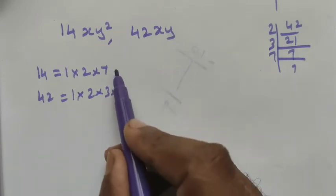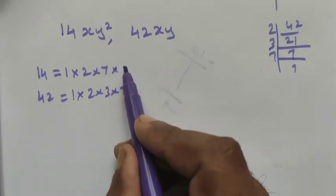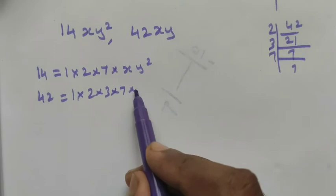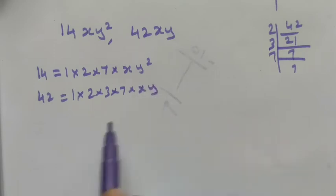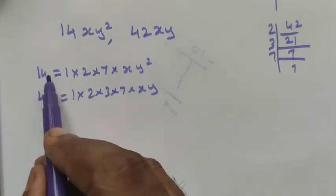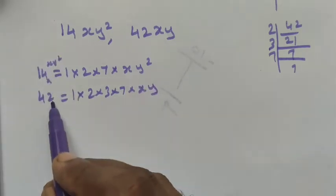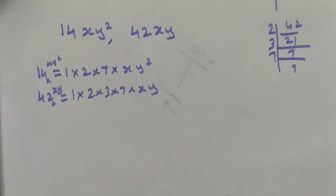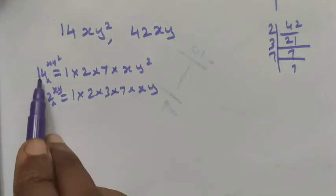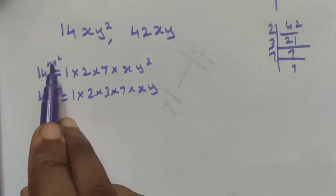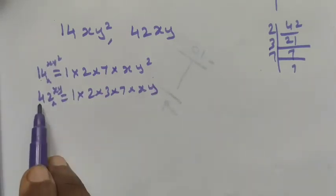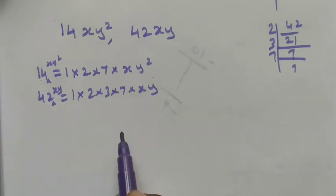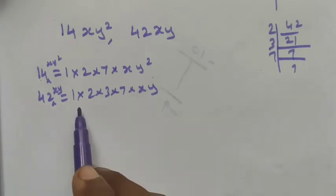For the variable part: the first expression has xy² and the second has xy. So 14xy² has factors involving x and y², while 42xy has factors involving x and y. Now we want to take the GCD of these two expressions.